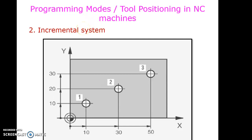The second system is the incremental system. Again the requirement is drilling three holes at three different locations. For hole one, we give the reference point as 10,10 as usual. But for drilling the second hole, the reference point is hole one's position — meaning in the incremental system, the previously machined operation's position is the reference point for the next operation.